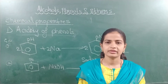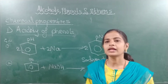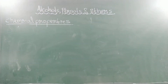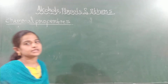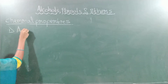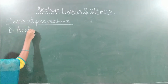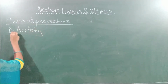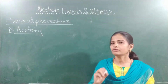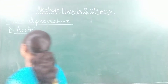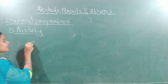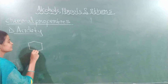Now the question arises: why are phenols acidic in nature? Because of the proton-releasing tendency. When phenol releases a proton in the presence of water, it forms the phenate ion (O⁻) plus H⁺.